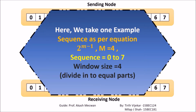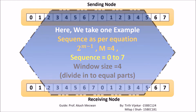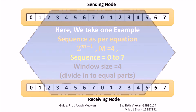Let's take an example. The window size is 4, so the sequence number range is decided by the formula: sequence number = 2 raised to m minus 1, where m is the window size. So the sequence range is 0 to 7.